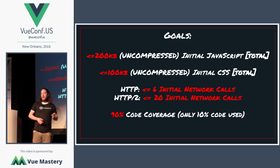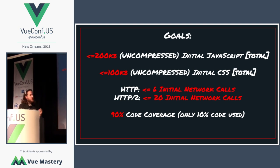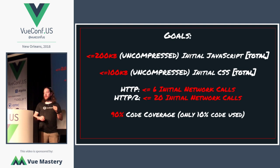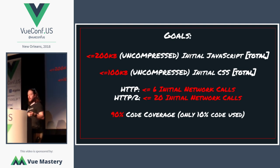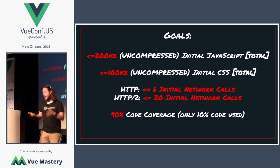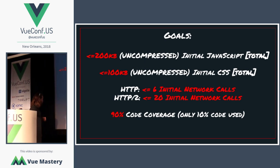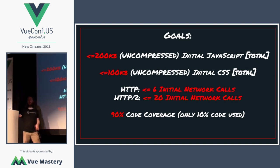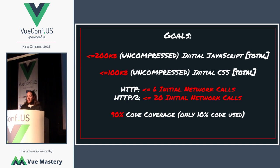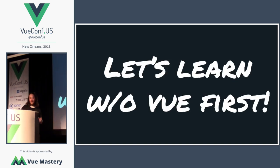This is going to seem scary at first, but trust me. The goal I've set for any team I've worked with: 200 kilobytes uncompressed should be the maximum JavaScript you ship on initial download. 100 kilobytes uncompressed of initial CSS — only what you need for that first load, not after interactivity. And 90% code coverage — 90% of the code you ship should actually be used. I'll show you a tool to find out how much code you're actually using on your website.